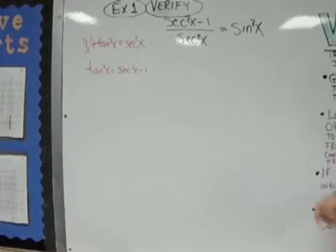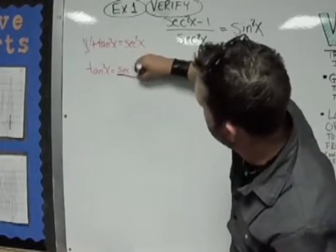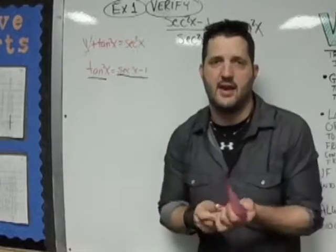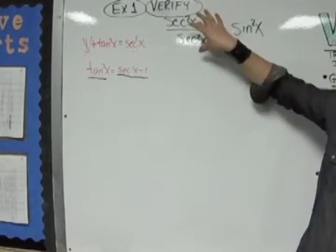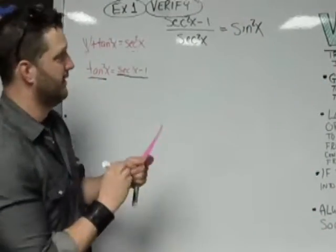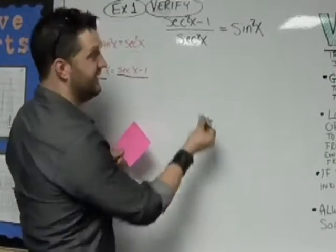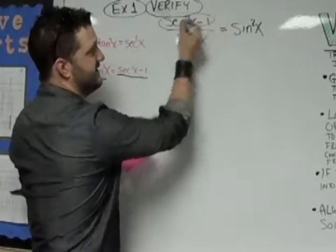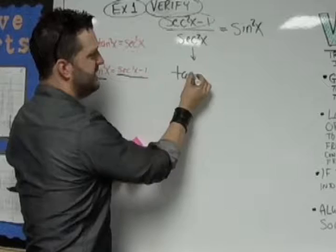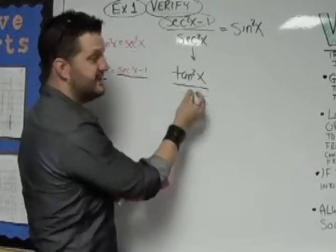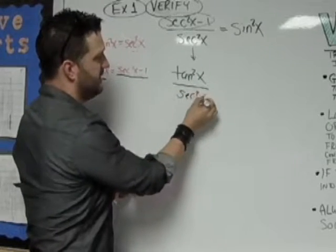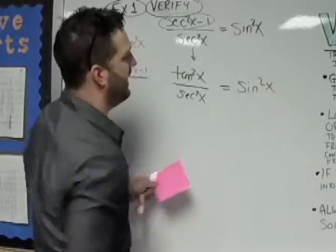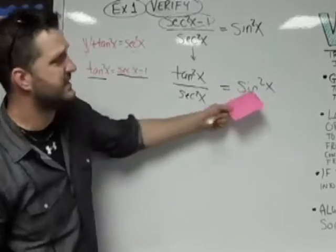So when I do that, what it allows me to do is, anytime I have a secant squared x minus 1, I'm going to replace it with a tangent squared x. And that'll make this left side look a little bit simpler right off the bat. So my first thing is, I'm going to put an arrow down here, and the first thing I did is I changed this into tangent squared x. The denominator is still secant squared x, and that still equals sine squared x. So every step that I do, I'm going to say equal sine squared x.